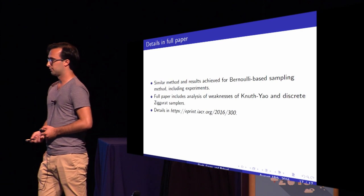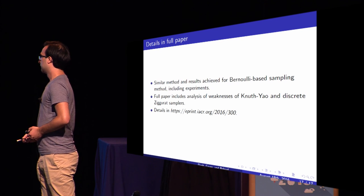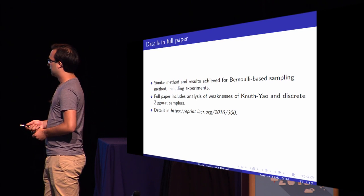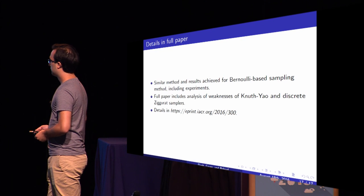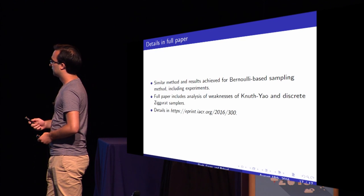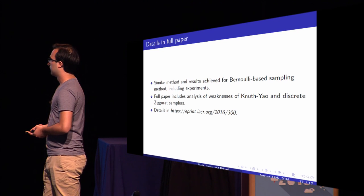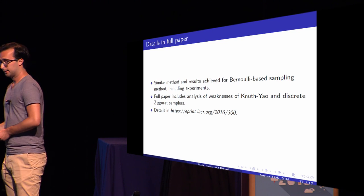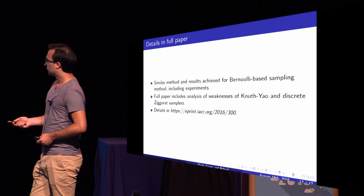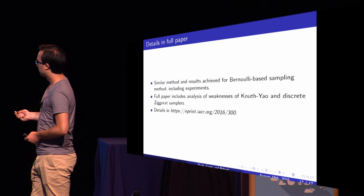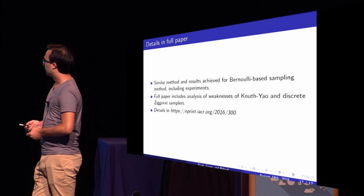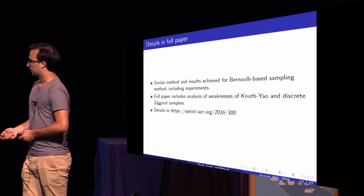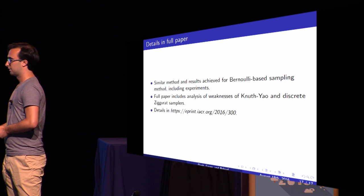For more details you can look at the full paper. We have a similar attack method and achieved similar results for the Bernoulli-based sampling method. In our full paper, which we updated yesterday, there is also analysis of the cache weaknesses of the Knuth-Yao sampler and the discrete ziggurat samplers.